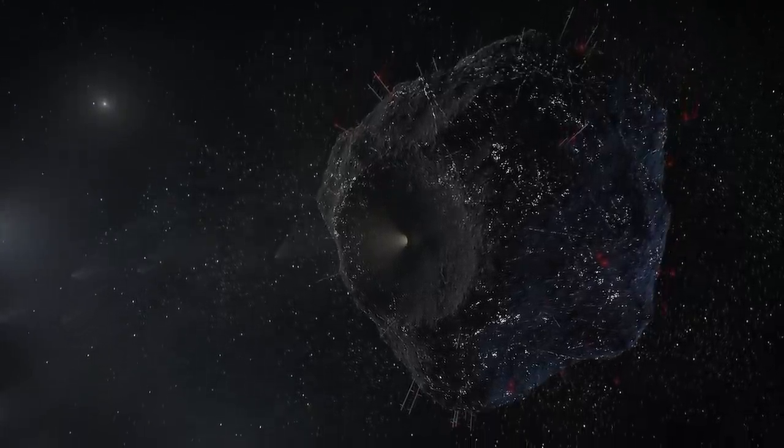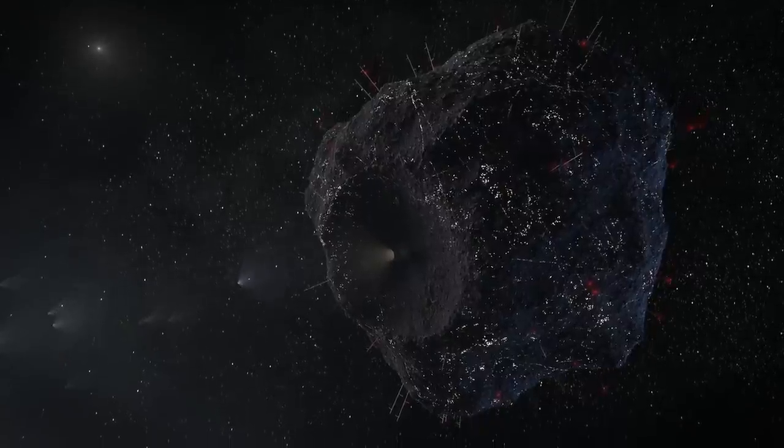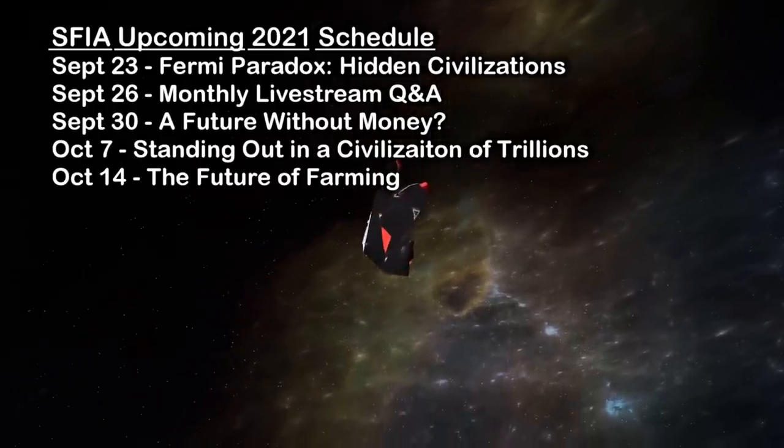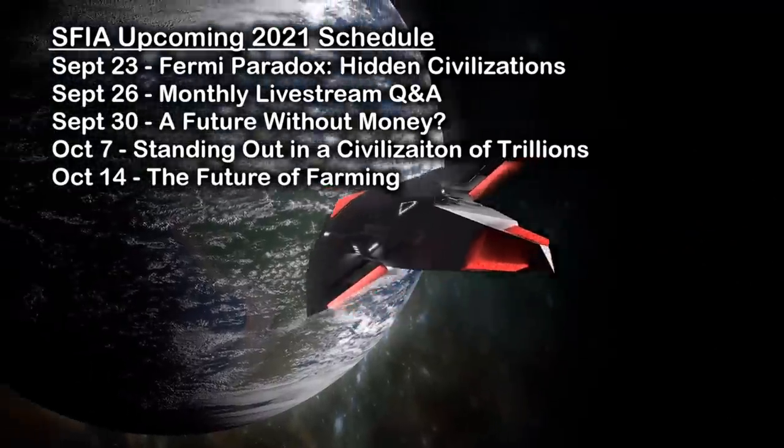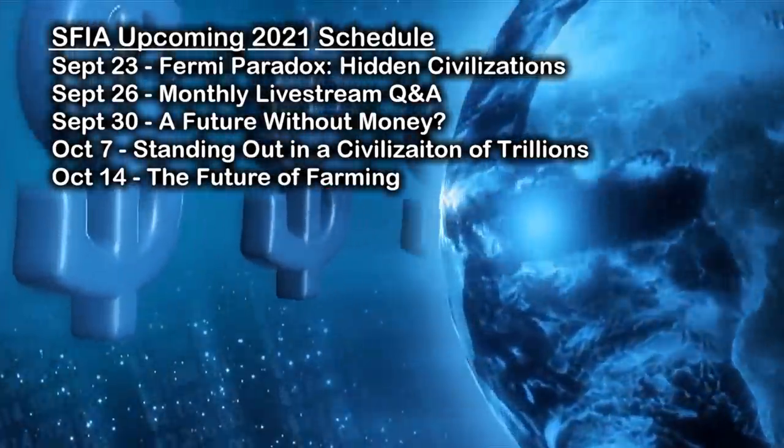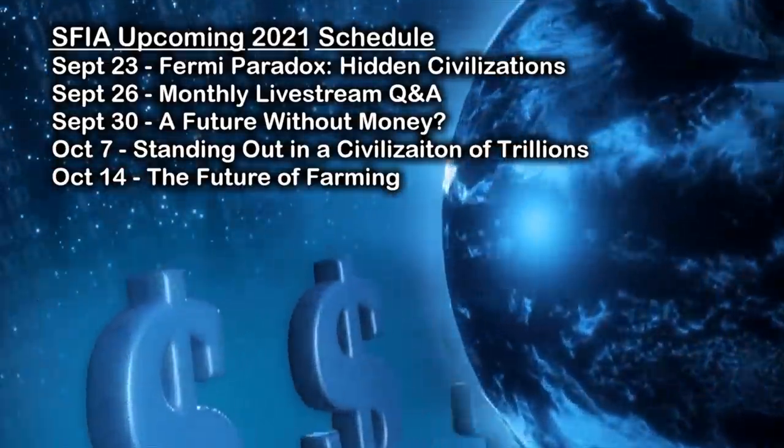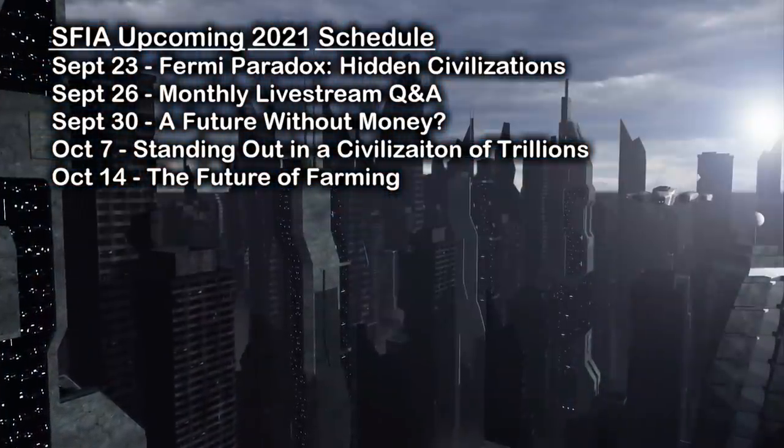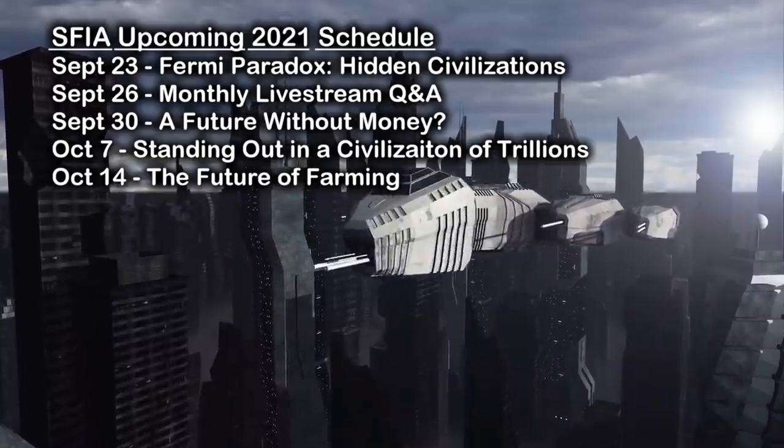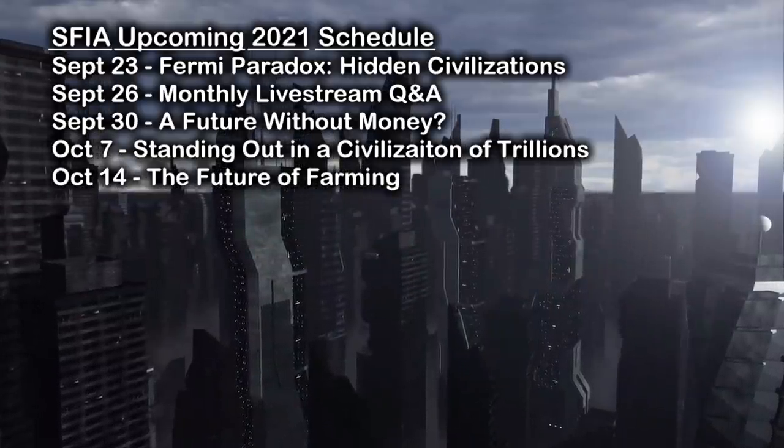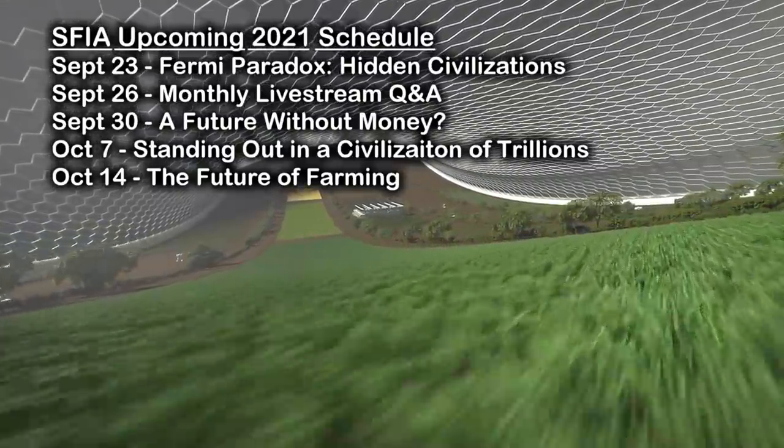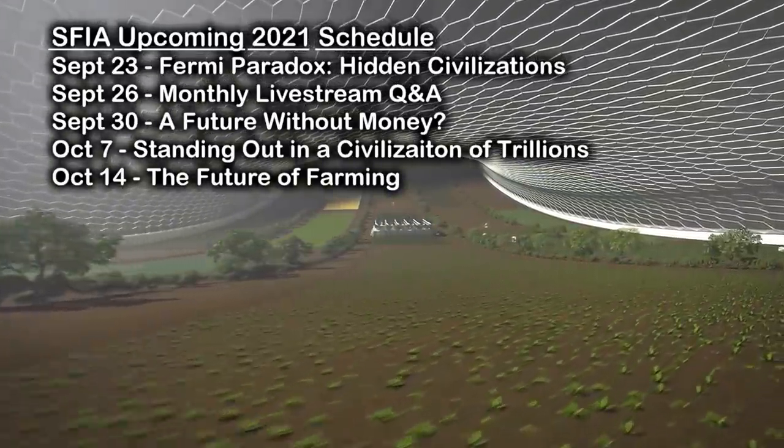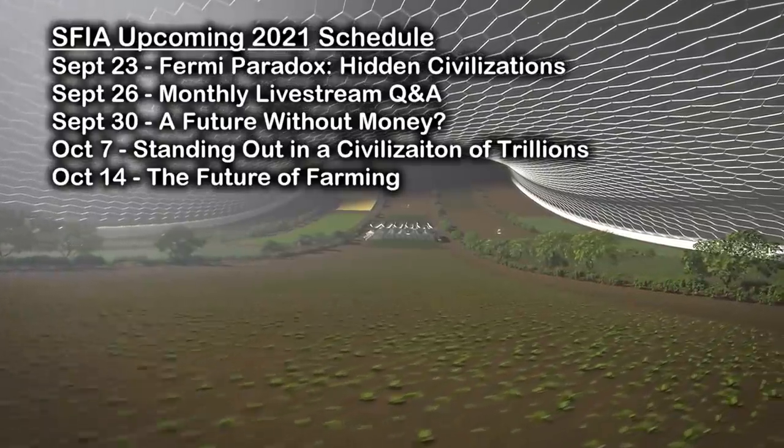Speaking of upcoming episodes, we still have three more outings for this month. We'll be returning to the Fermi Paradox on September 23rd for a look at the notion of hidden alien civilizations. Then we'll have our monthly livestream Q&A on Sunday, September 26th at 4pm Eastern Time before closing the month out by asking if it's possible for future civilizations to exist without money on September 30th. Another thing about all these huge megastructures is they are designed to let humanity grow our population comfortably into the countless trillions, and we'll open October up by asking how someone could stand out in such a vast sea. Then on October 14th we'll ask how we might feed all those folks, as we look at the future of farming in the next few decades and beyond. Now if you want to make sure you get notified when those episodes come out, make sure to subscribe to the channel.